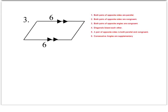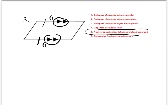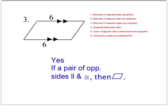Number three tells us that we have opposite sides that are parallel — those are the parallel symbols — and that same set of opposite sides are also congruent. This matches test number five, which says a pair of opposite sides is both parallel and congruent at the same time. The conditional statement is: if a pair of opposite sides is parallel and congruent, then it is a parallelogram.